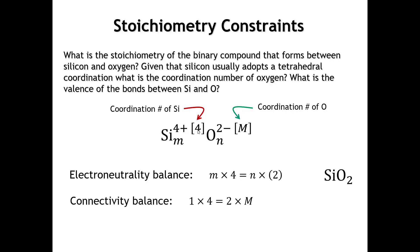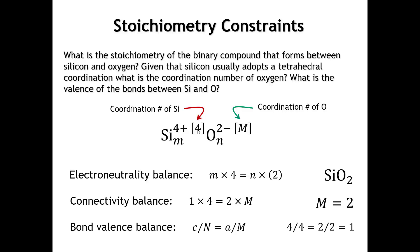The connectivity balance tells us that if there is one silicon in the empirical formula making four bonds, then because there are two oxygens, the coordination number of oxygen must be 2 — so oxygen could be in a linear or bent coordination. Looking at the bond valence balance, whether we take silicon with oxidation number 4 spread over 4 bonds, or oxygen with oxidation number 2 spread over 2 bonds, in either case we get a bond valence of 1 per bond.